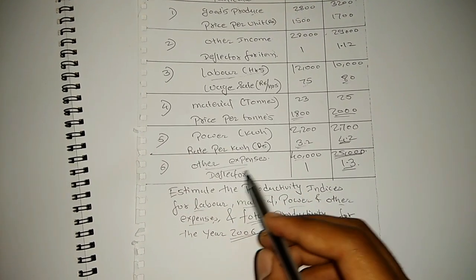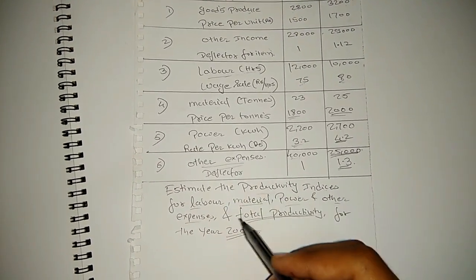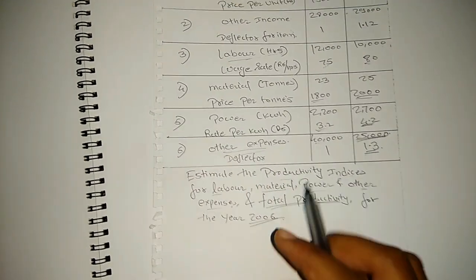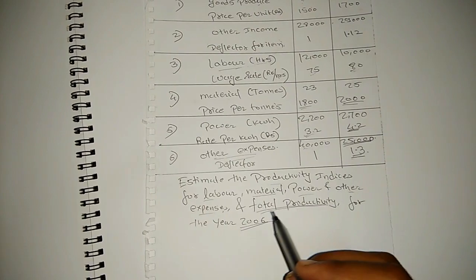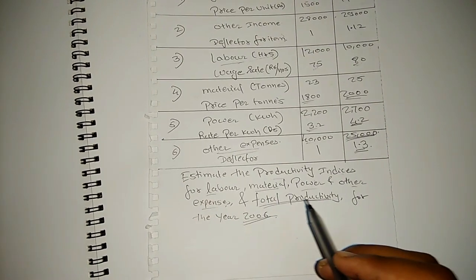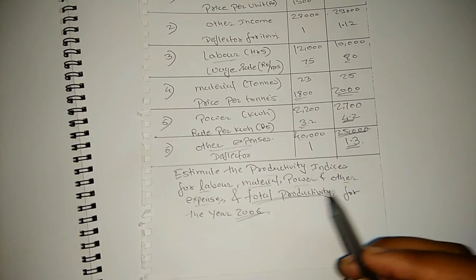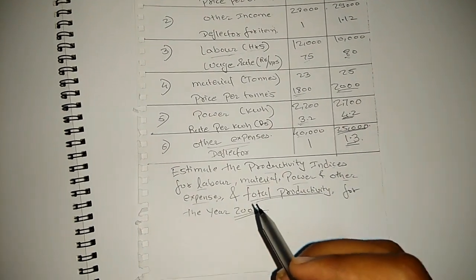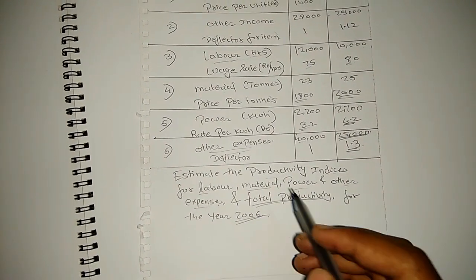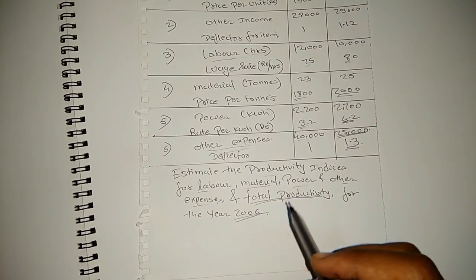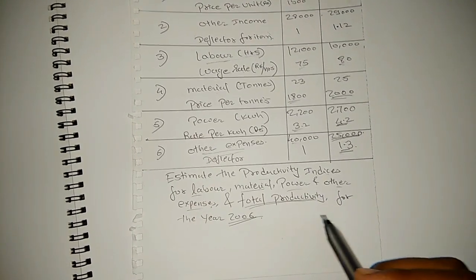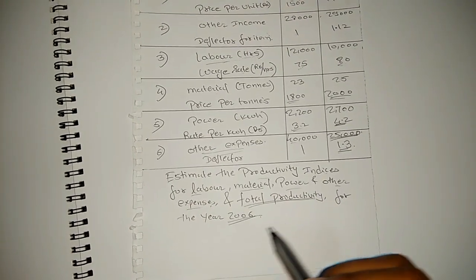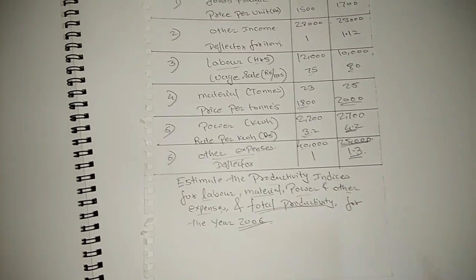The deflector for the other expenses is given. Now we have to calculate the productivity indices for labor, material, power, and other expenses individually. Then we have to calculate the total productivity of the company for the year 2006.